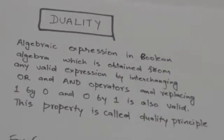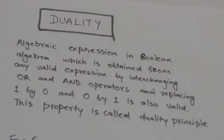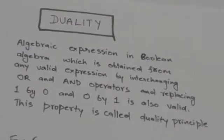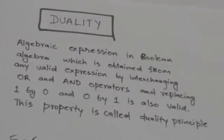Welcome back to the tutorial. In this tutorial we will learn about the duality principle — an algebraic expression in Boolean algebra which is obtained from any valid expression by interchanging OR and AND operators, and replacing 1 by 0 and 0 by 1, is also valid. This property is called the duality principle. It will be more clear after these examples.